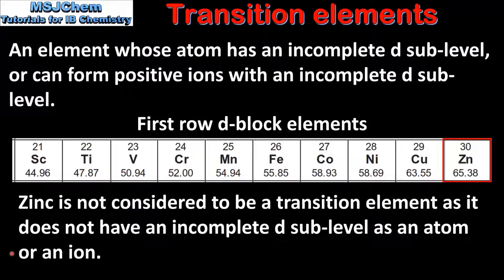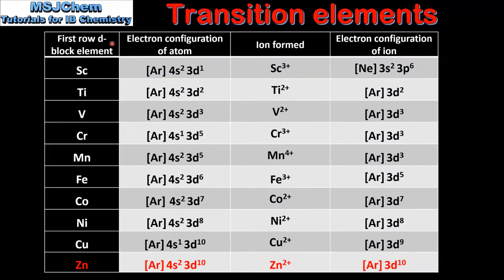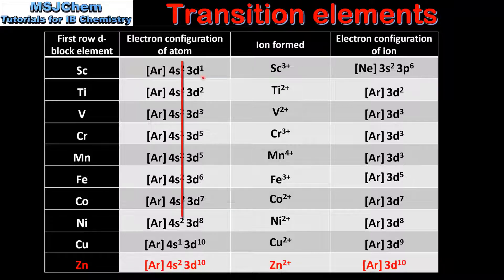Next we'll look at this in more detail. In this table we have the first row D block elements, the electron configuration of the atom, the ion formed, and the electron configuration of the ion. Starting with scandium, as we go down the table each element has an incomplete D sublevel.